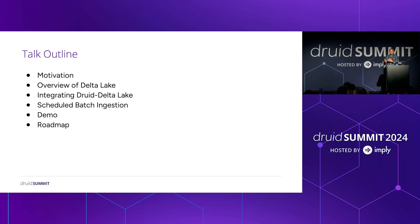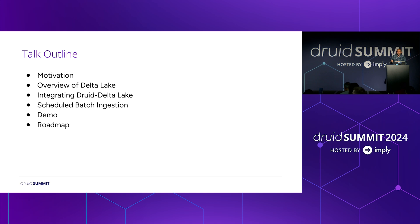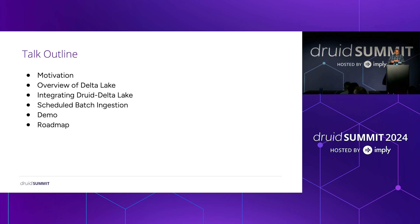Then we'll go to the overview of Delta Lake — what is Delta Lake, how does it work, what are the internals. We'll also talk about the Delta Kernel, a library we are building to enable query engines like Druid or Trino to read Delta Lake tables more easily. Then we'll cover how Druid-Delta Lake integration is done, followed by a demo, scheduled batch ingestion, and a roadmap of exciting upcoming features.